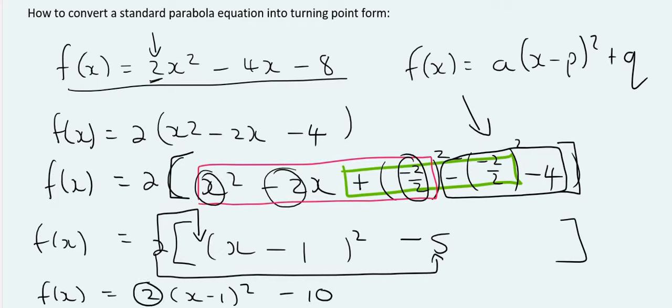So, notice our a value, which is in the front, that's a 2. Our p value is a 1, and our q value is minus 10. What this means for the graph is that its turning point would be at 1, so it's always that value, and minus 10.